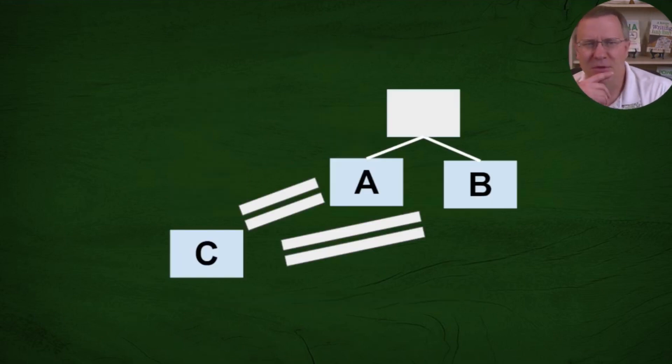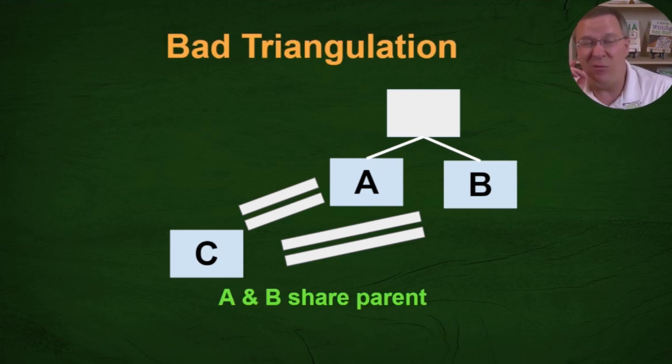So let's go to another close relationship. Siblings. We have A and B who are siblings and they both match C. Now of course in this case A and B match each other as well by their relationship. So is this triangulation? I would say that this is triangulation but it's really bad triangulation. And this is probably what people are thinking about when they say or they hear that you shouldn't use close relatives for triangulation.